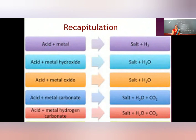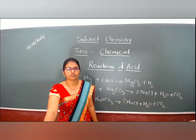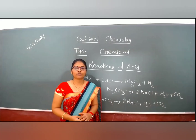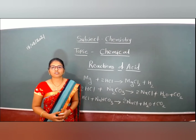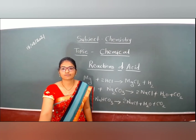These are all the reactions we discussed: reaction of acid with metal, metal oxide, and metal carbonate or metal bicarbonate to form different products. The remaining chemical properties of acid we will discuss in the next session. Thank you everyone.